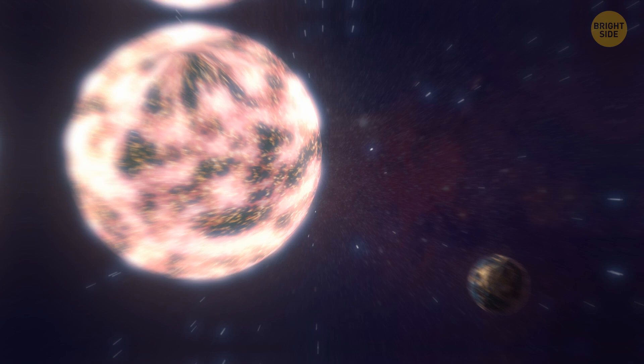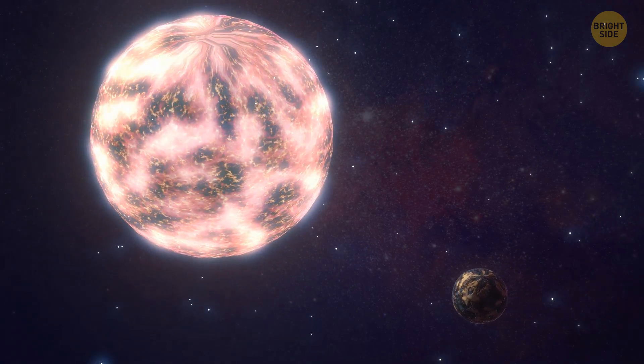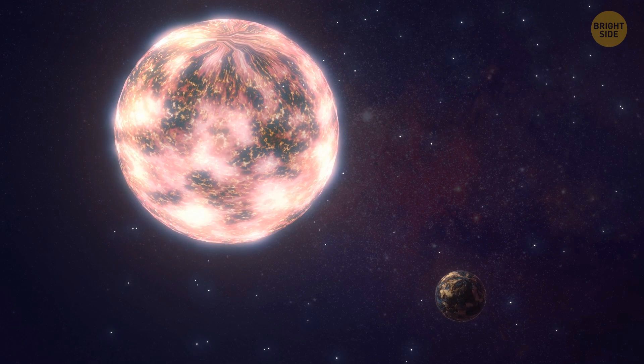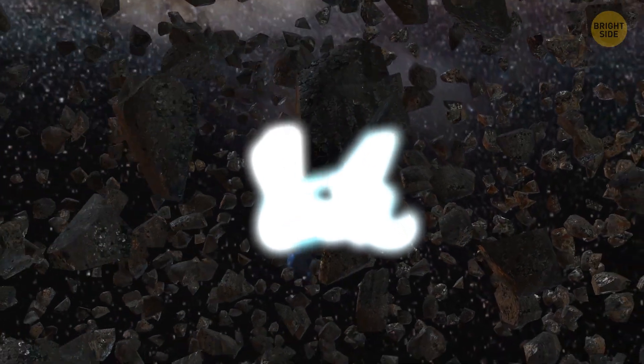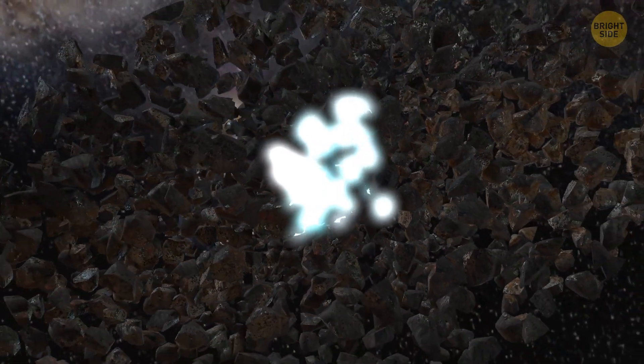Which, in space terms, is very close. The planet is also super close to its star, completing one year in almost 4 days. This discovery is making scientists rethink their ideas about how planets and stars come into existence.